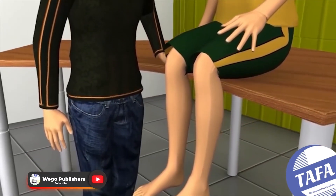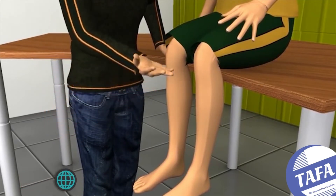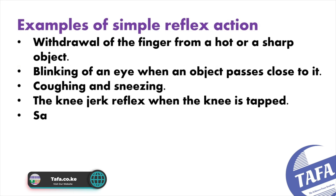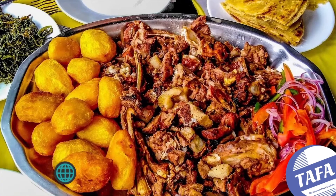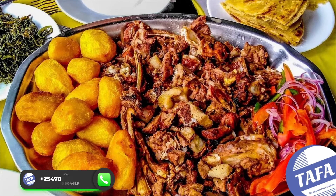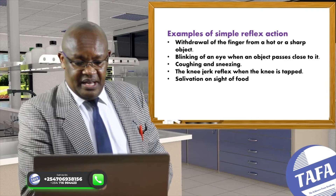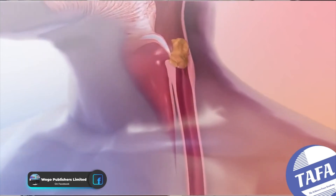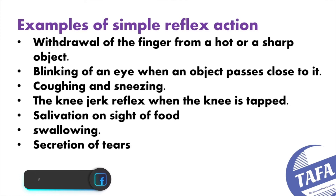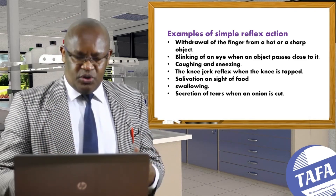We also have the knee-jerk reflex, which occurs when the knee is tapped. There is also salivation at the sight or smell of food — when you smell food, you find you have started salivating. Then we have swallowing, which occurs in the same manner. Finally, secretion of tears is another example — when an onion is brought near your eyes, you find yourself producing tears.